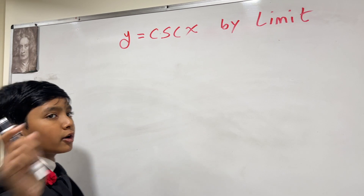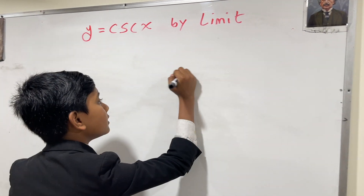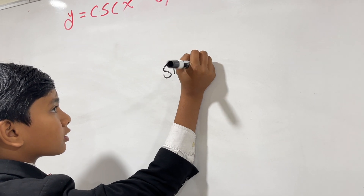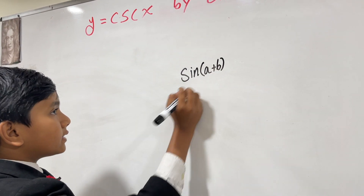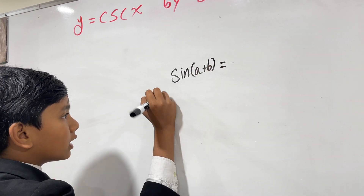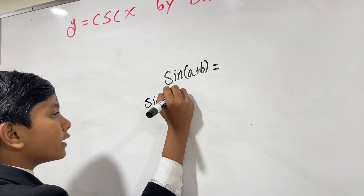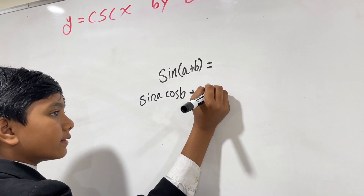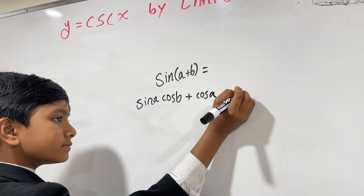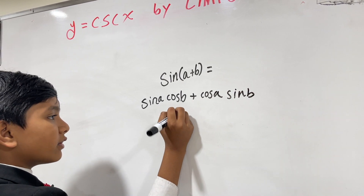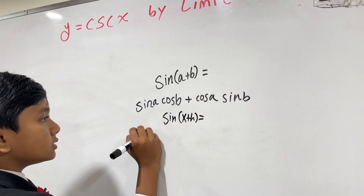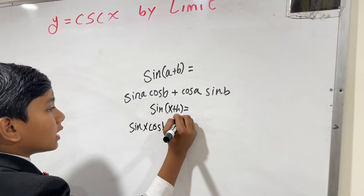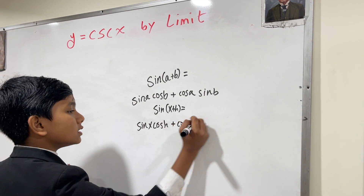So cosecant of x is 1 over sine of x. And sine of (a + b) — this is important because later we're going to have to expand it — is equivalent to sine(a)cosine(b) plus cosine(a)sine(b). So that means that sine(x + h) would be sine(x)cosine(h) plus cosine(x)sine(h).